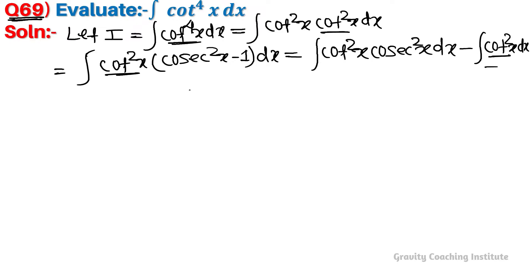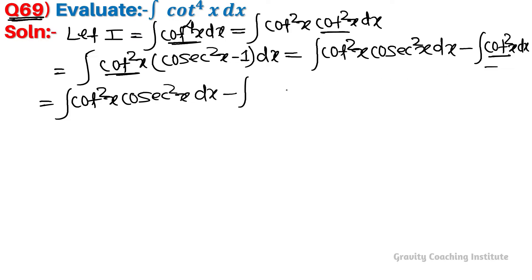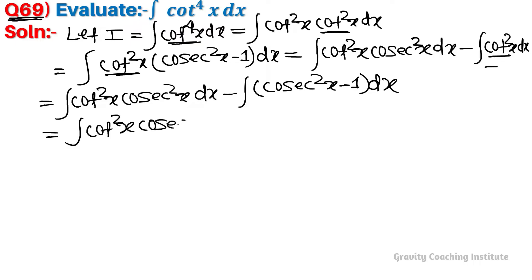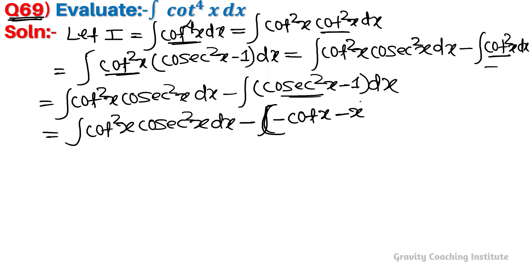Cot square x is easy to change to cosec term. Expanding: integration of cot square x into cosec square x minus 1, equal to integration cot square x cosec square x dx minus integration cot square x dx. Integrating cot square x gives minus cot x, and integrating 1 dx gives x plus c.